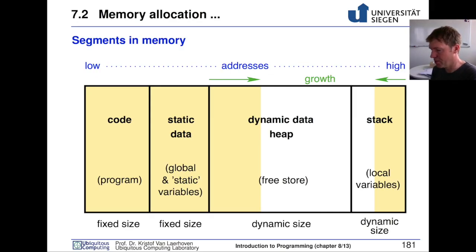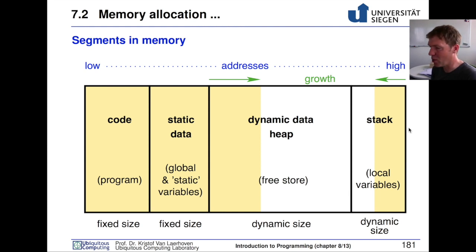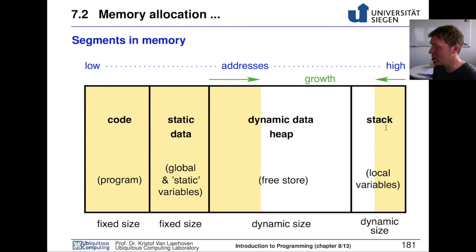We stopped at memory allocation and saw that there are different types of memory. Our code lives in program memory. Then there is static data, dynamic data — the heap — and the stack. The stack is something we already know fairly well: whenever you enter a function, the variables living only in that function are added to the stack, whether it's the main function or any function called within it.